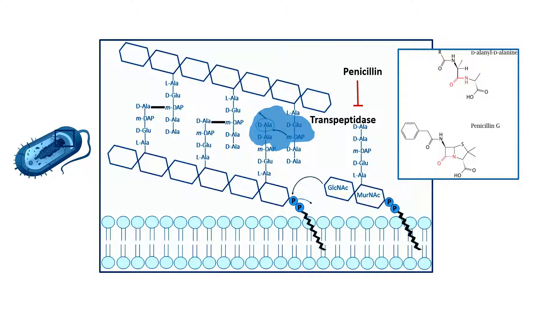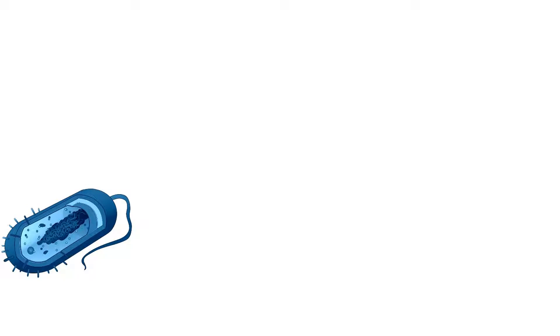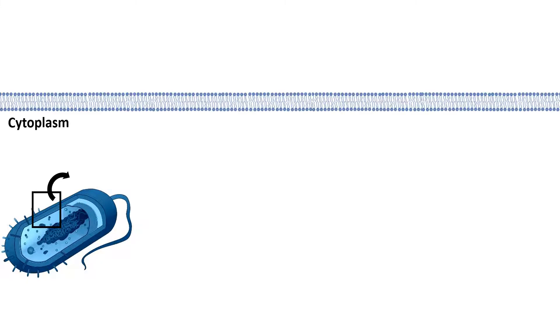Let's just look at how normally bacterial cell wall is formed and what is the role of transpeptidase in formation of the cell wall. Then we can appreciate how penicillin can interfere with the cell wall formation process.